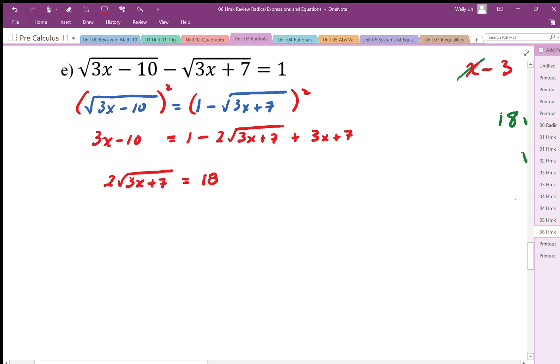And then on this side here, conveniently, the 3x's cancel out. So I just end up with the square root term equaling 18.